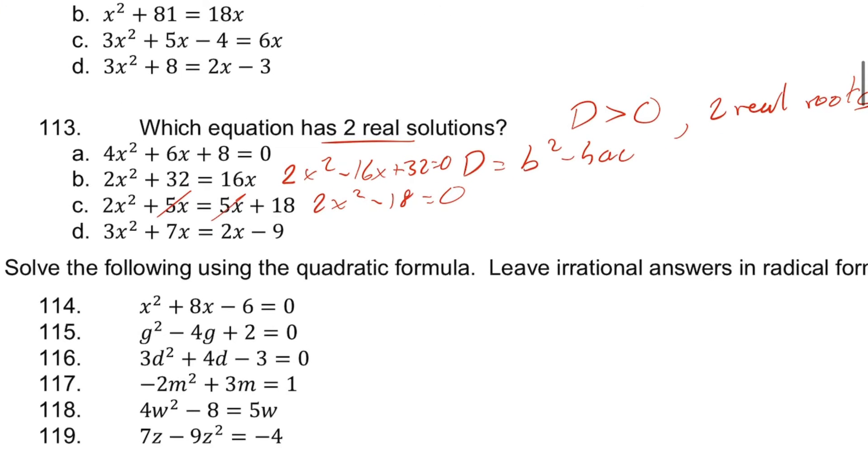In the last one, we'll have 3x squared, and subtracting 2x from both sides, we'll have plus 5x. Then adding 9, we have plus 9 equals zero.